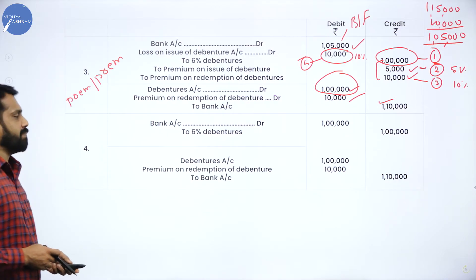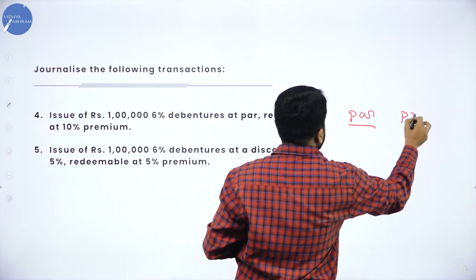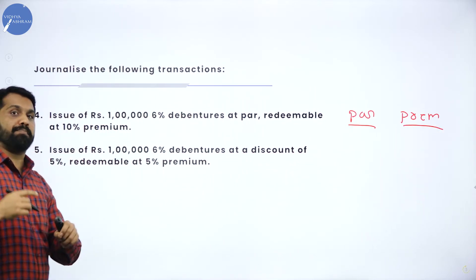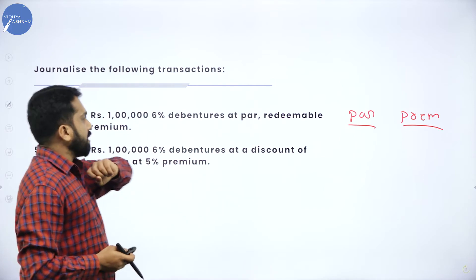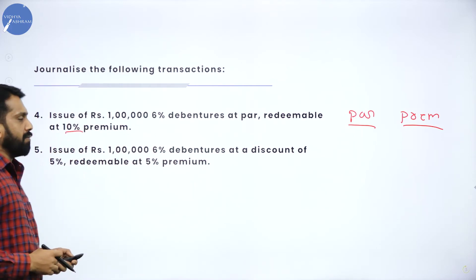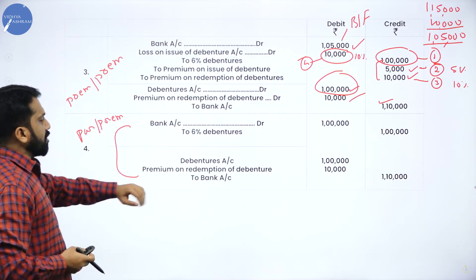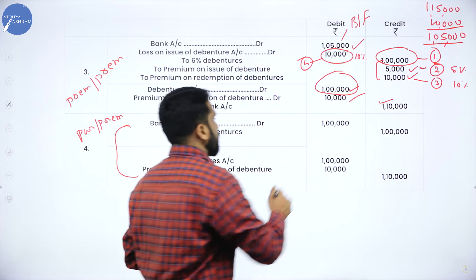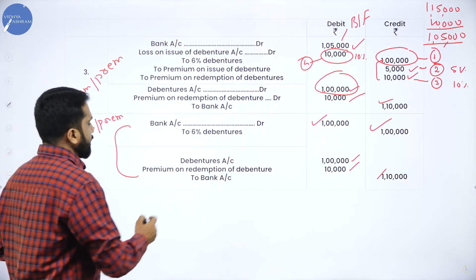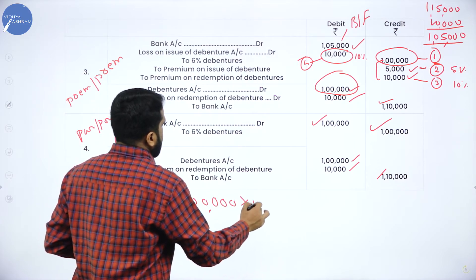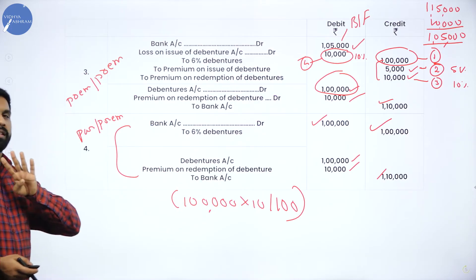We will go for the fourth journal entry: issue one lakh debenture at par, redeemable at premium. Again go back to your format and check which journal entry to write for par and premium. In this, 10% premium — simple. Bank to debenture, debenture to premium with bank. Simple calculation: one lakh and one lakh, one lakh plus 10,000 equals one lakh 10,000. Wherever premium comes, we consider 10%. One lakh multiplied by 10 divided by 100 gives 10,000. Hope you understood the fourth journal entry.